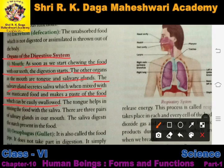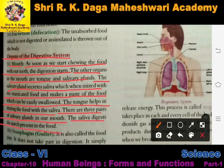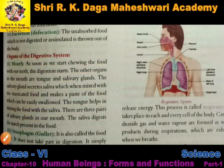The tongue helps in mixing food with saliva so that it forms a paste and can be easily swallowed. There are three pairs of salivary glands in our mouth. The saliva digests the starch present in the food - the starch present in our food is digested with the help of saliva.